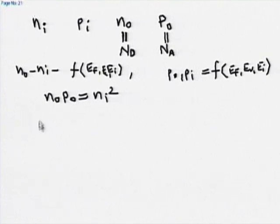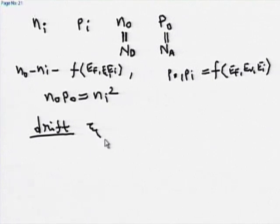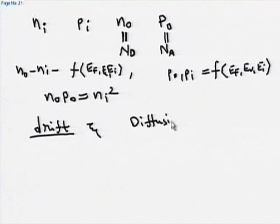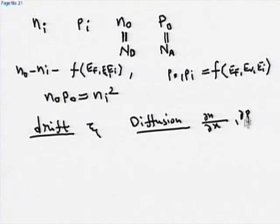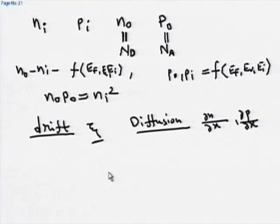Then we looked at drift — carrier motion under the electric field — and diffusion — the motion of the carrier under the concentration gradient, dn/dx or dp/dx. These are the driving forces: the electric field drives carriers from one point to another, and diffusion drives carriers from one point to another due to concentration gradient.